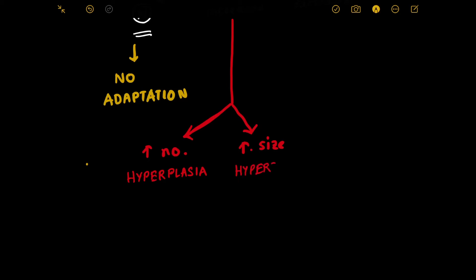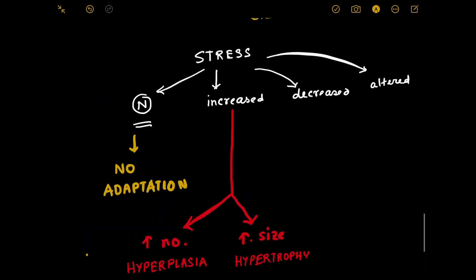Now if the stress is decreased, then what will happen? The cell will shrink in size because as the workload is less, the cell doesn't require a large amount of cytoplasm, a large nucleus, or a prominent nucleolus. So in that situation, the cell will shrink in size, and this shrinking is known as atrophy.